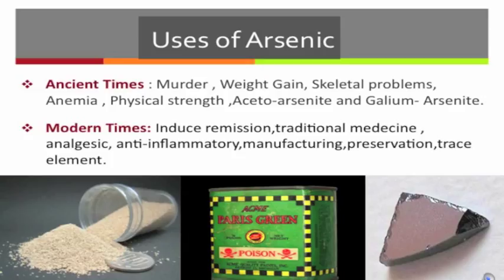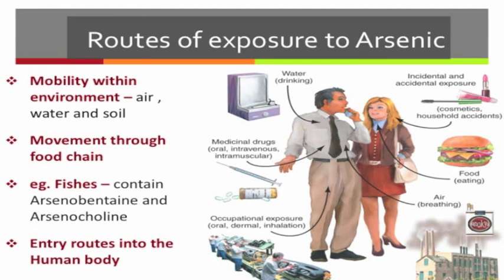Routes of Exposure to Arsenic. Arsenic is mobile within all environmental components — it exists in air, water, and soil. It occurs in seafood in the form of arsenobetaine and arsenocholine, which causes increased arsenic levels in the blood. Intake is higher from solid food. Arsenic enters the food chain from agricultural products grown in contaminated soil, and eventually it works its way up to humans.